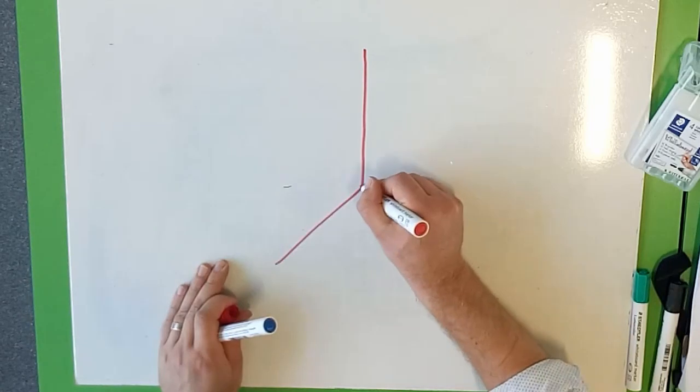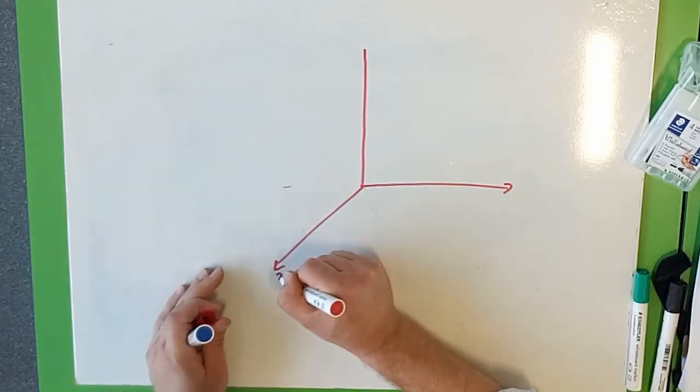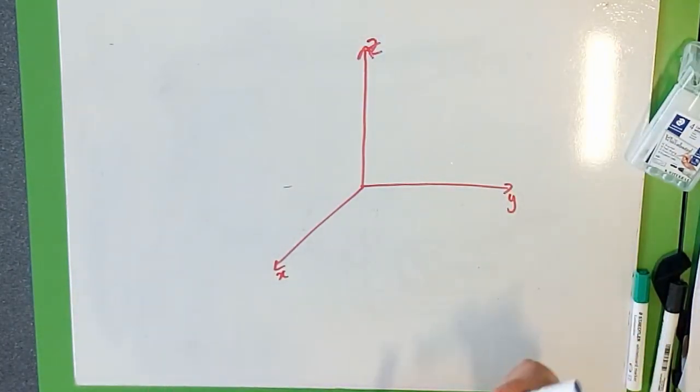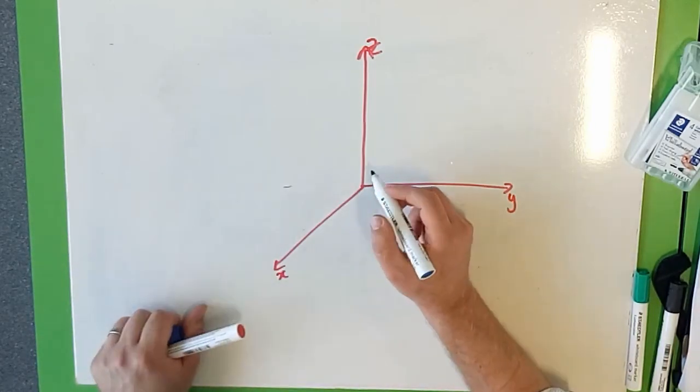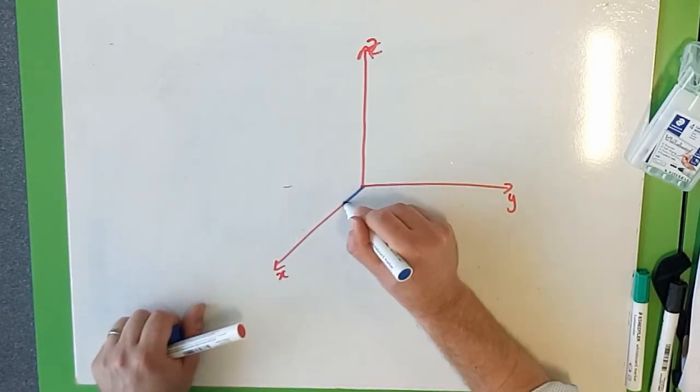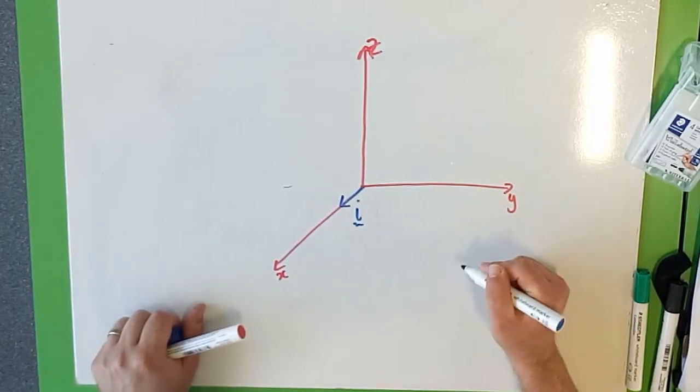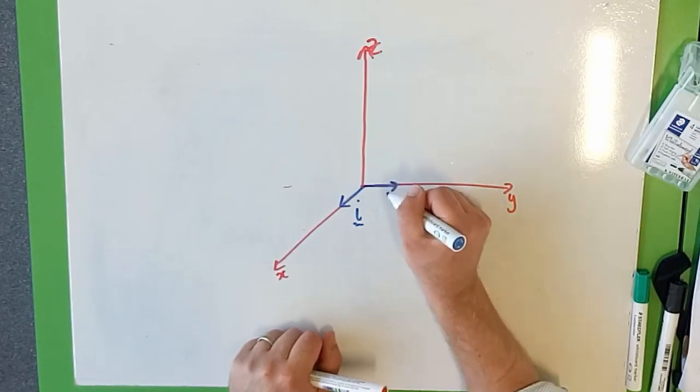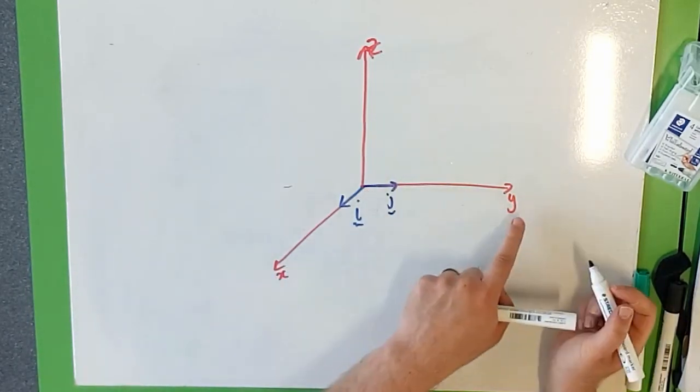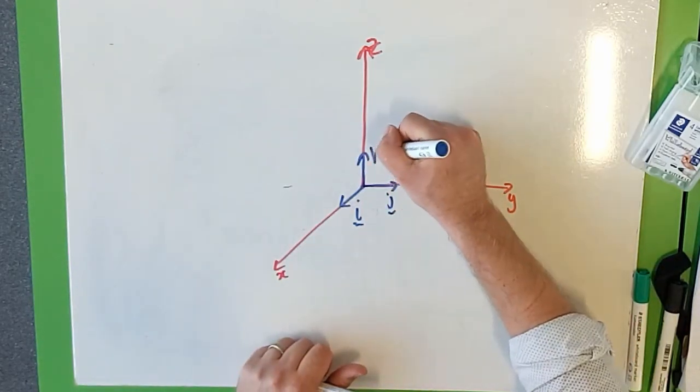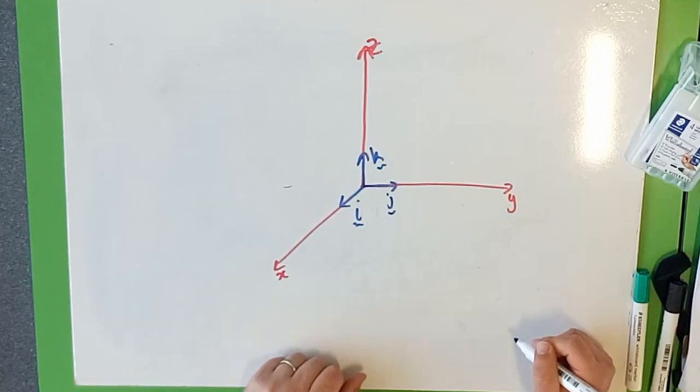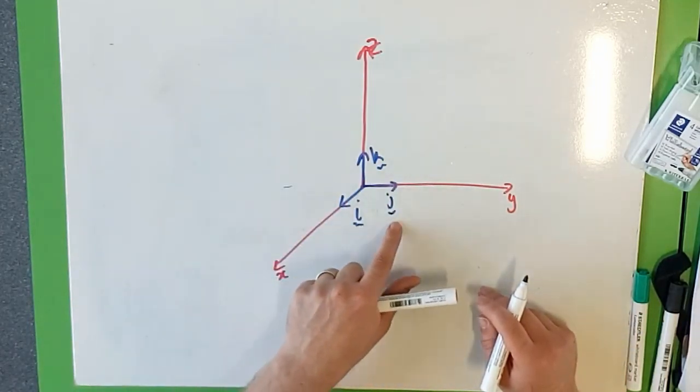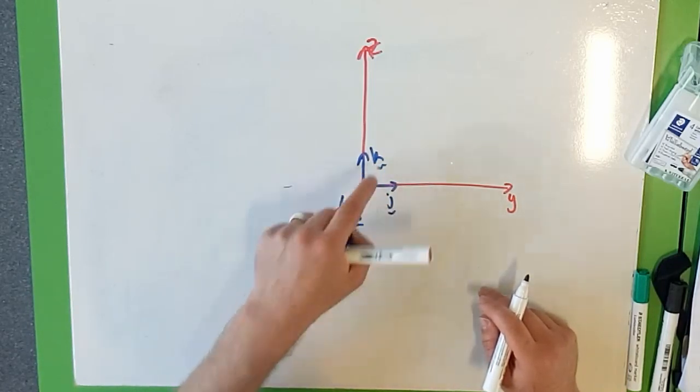So let's pretend we've got a 3D vector. So 3D plane, x, y, and z in this direction. So we can use what's called the i, j, k notation. So i is the unit vector that's in the same direction as x, j is the unit vector in the direction of y, and k is the unit vector in the direction of z. Now we can express our vectors as a combination or a linear combination of i, j, and k.